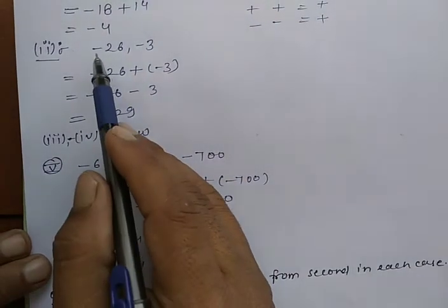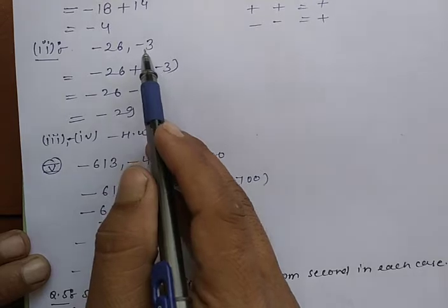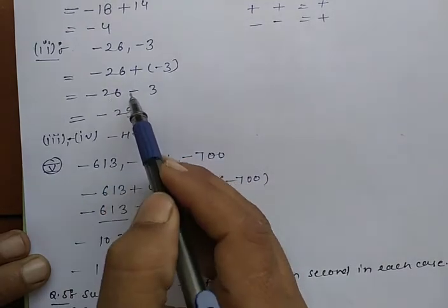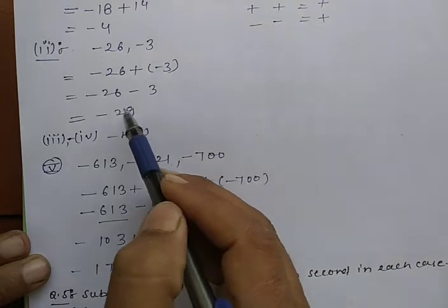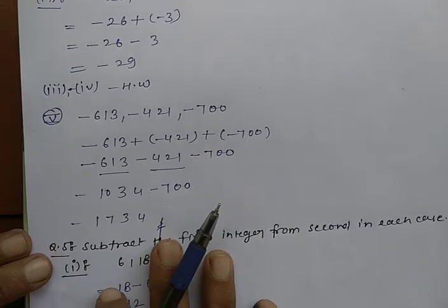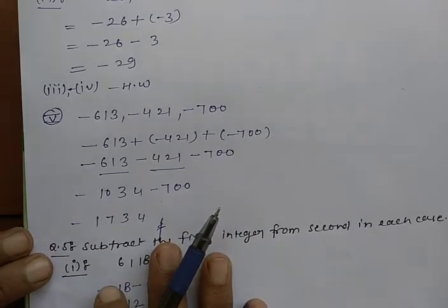Next question is minus 26 minus 3. Minus minus is plus, so it equals minus 29. Third question and fourth question are homework.